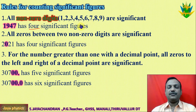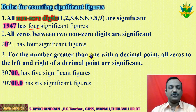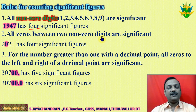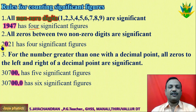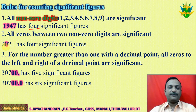If all non-zero digits are meaningful and significant, then what about zeroes? The second rule: all zeroes between two non-zero digits are meaningful and significant. For example, 2021 — the zero is between two non-zero digits. So that zero is significant and meaningful. How many digits are meaningful? One, two, three, four. So the significant figure is 4.